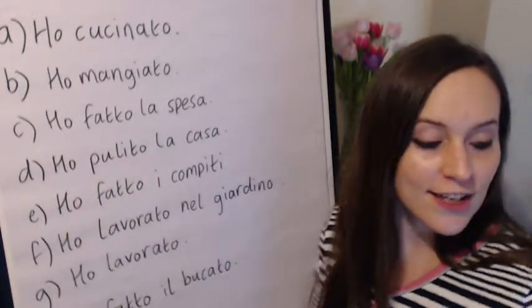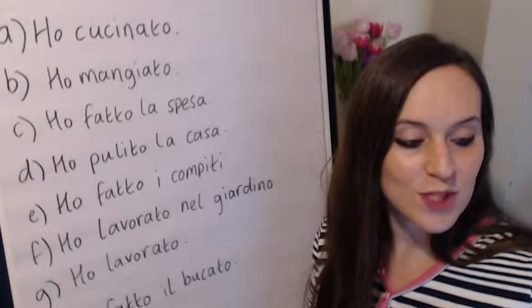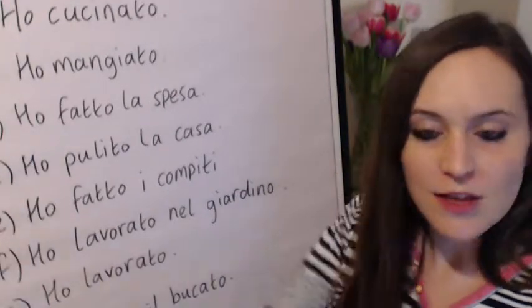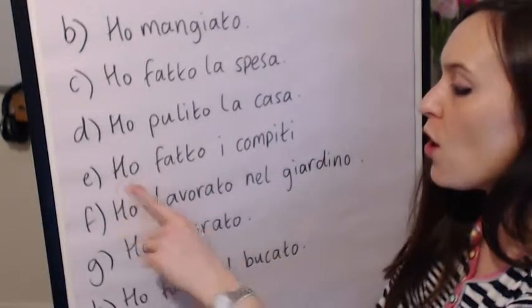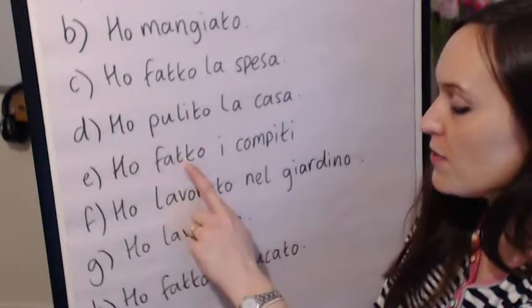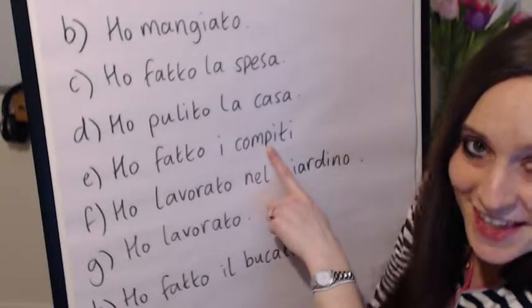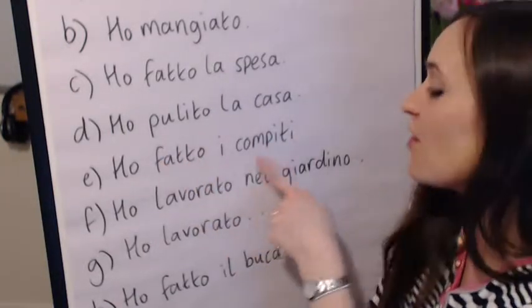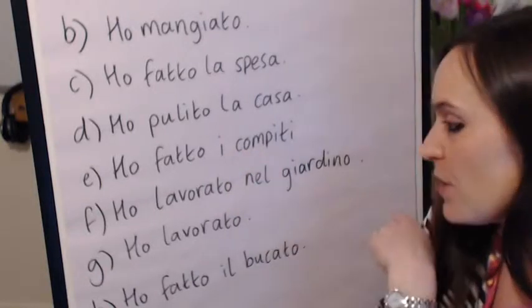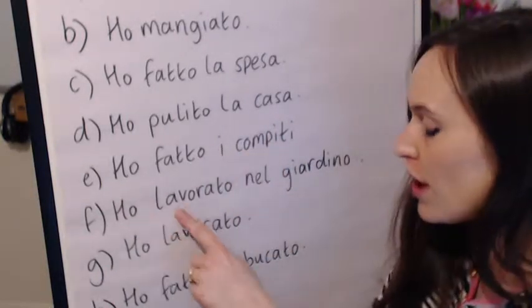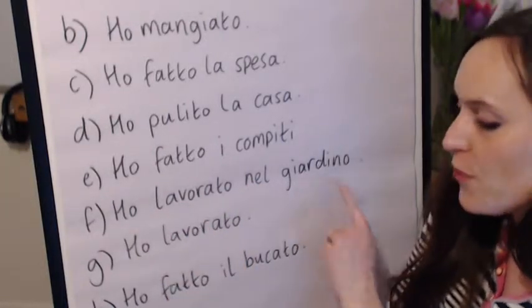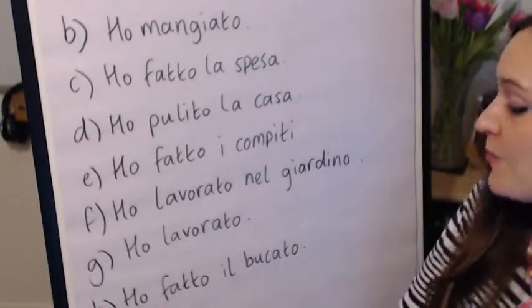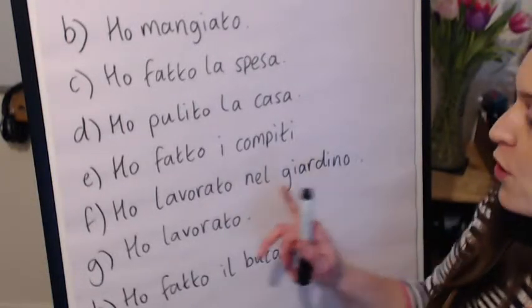Here we have an I-R-E verb — pulire, which means 'to clean'. So ho pulito la casa — I cleaned the house. Ho fatto i compiti — again we've got fatto — that means I did the homework. Ho lavorato nel giardino — I worked in the garden. Nel giardino — in the garden.